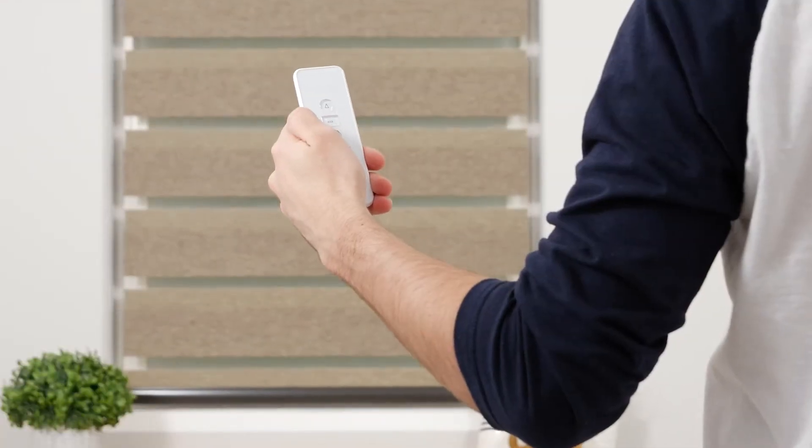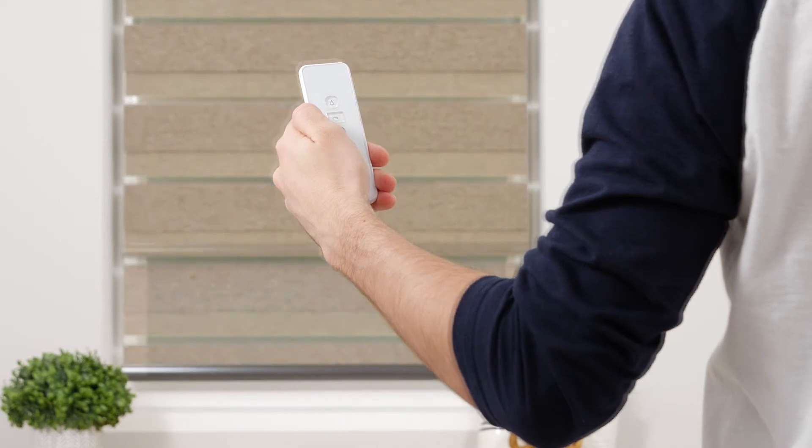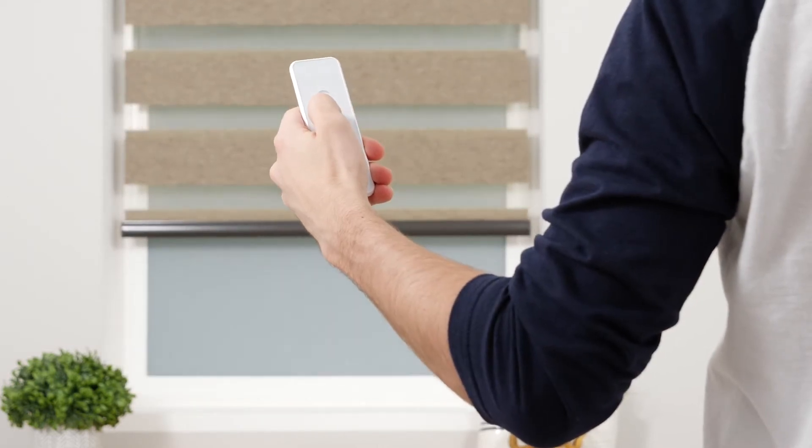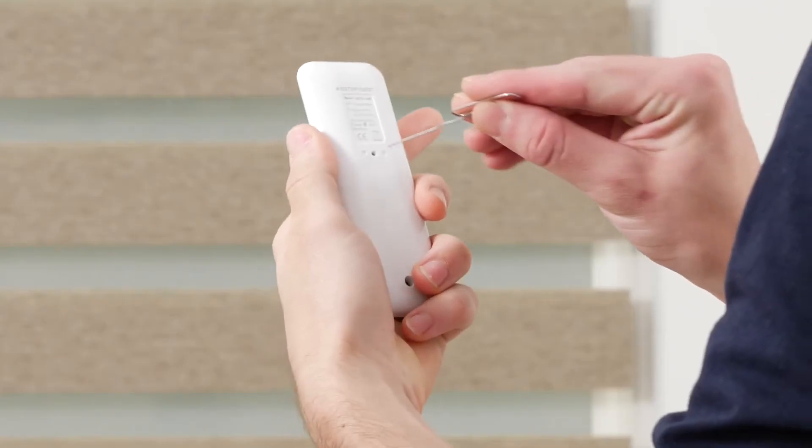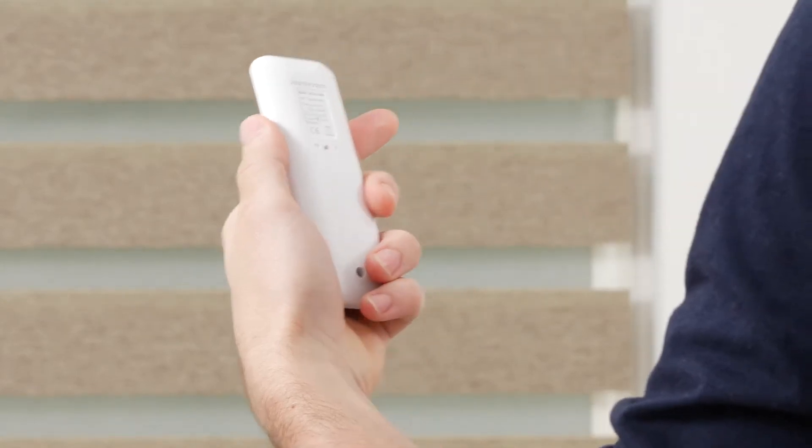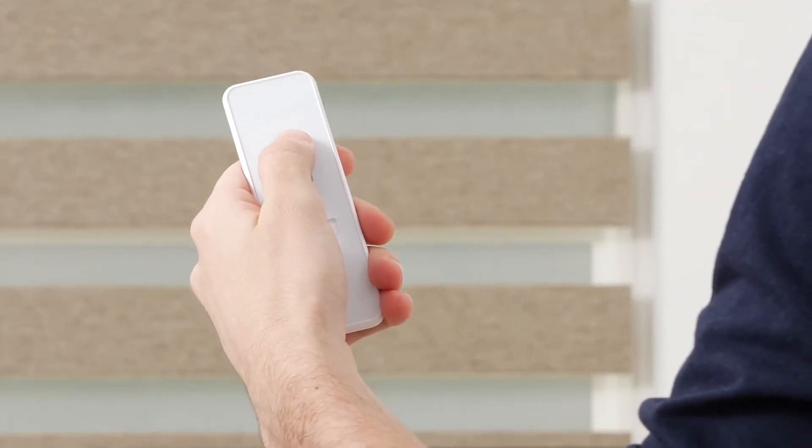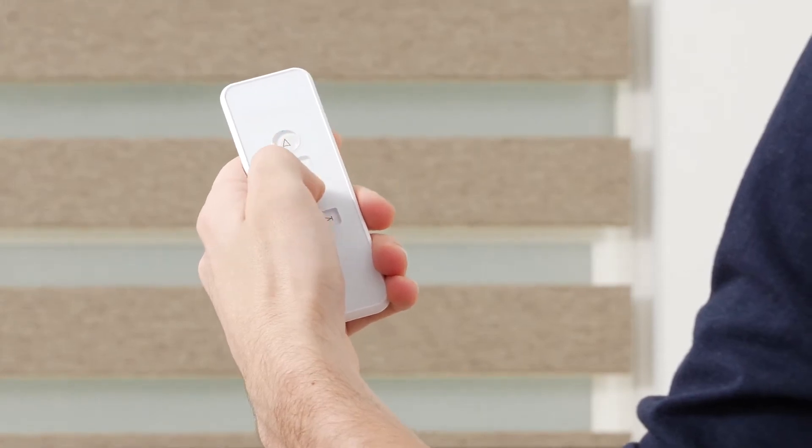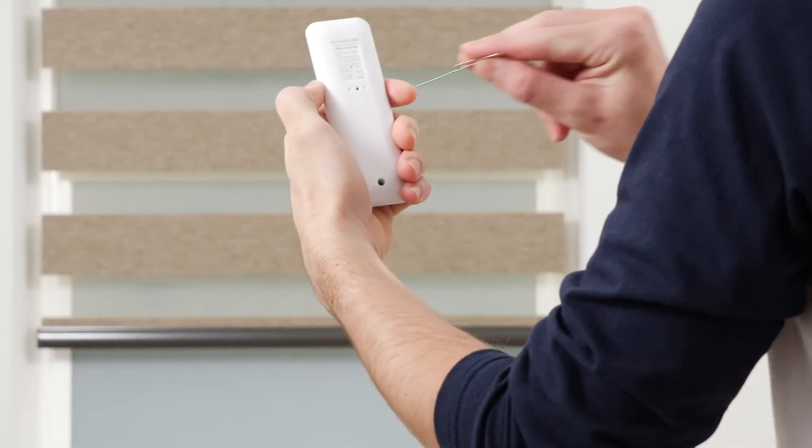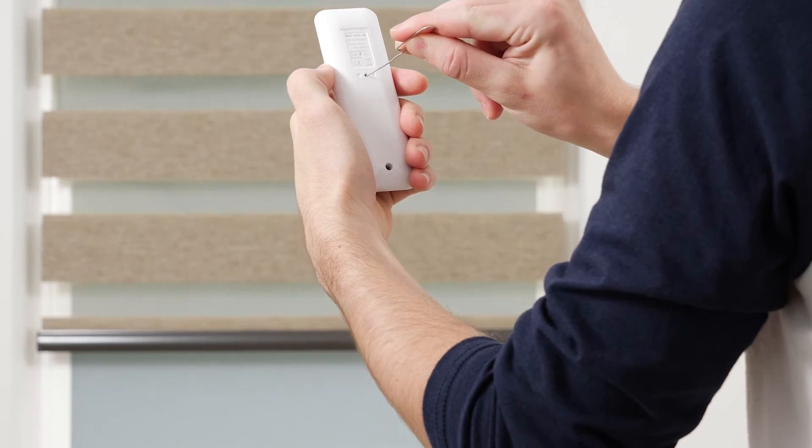Using the up and down buttons, move your shade to your desired favorite position. Press the program button on the back of your remote until the shade jogs to indicate that it is now in limit setting mode. Adjust the shade if needed until it reaches your favorite spot. Then press the program button and the shade will jog to confirm that your favorite position is now saved.